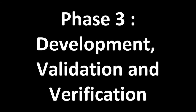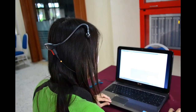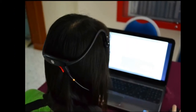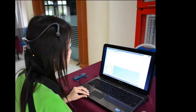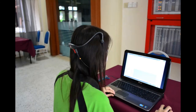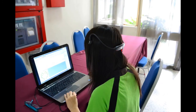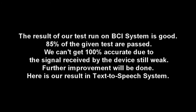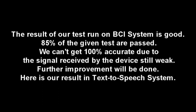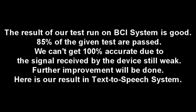Phase 3: Development, Validation and Verification. In this phase, development of our device has been completed and we are going to run some tests. As you can see, the device is mounted onto the head of the tester. Brain signals will be amplified by the device and sent to our BCI system for further processing. Data collected will then be translated into text and further sent to the text-to-speech system. The result of our test run on the BCI system is good — 85% of the given tests passed. We can't get 100% accuracy due to the signal received by the device still being weak. Further improvement will be done.